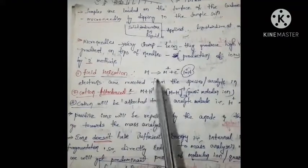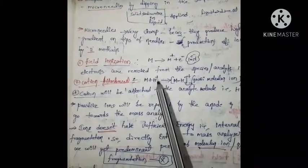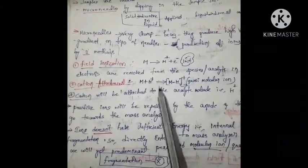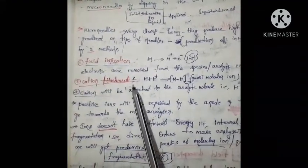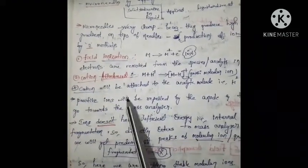The second method is cation attachment. Here a cation — a positively charged proton — gets attached to the molecule, forming a quasi molecular ion. The cation attachment may be H⁺ or Na⁺, etc. An ion is formed by this cation attaching to the analyte molecule.